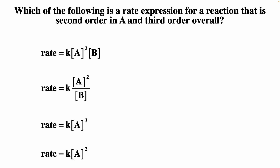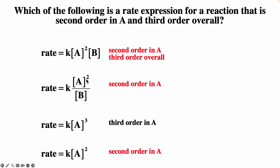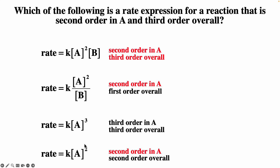Which of the following is a rate expression for a reaction that is second order in A and third order overall? The first option is second order with respect to A with exponents summing to 2+1=3, so third order overall — that's the answer. The second option is second order in A but 2−1=1, so first order overall. The third is third order in A. The fourth is second order in A but second order overall. So the correct answer is the first one: second order in A, third order overall.